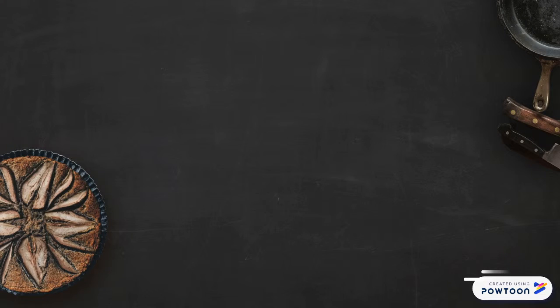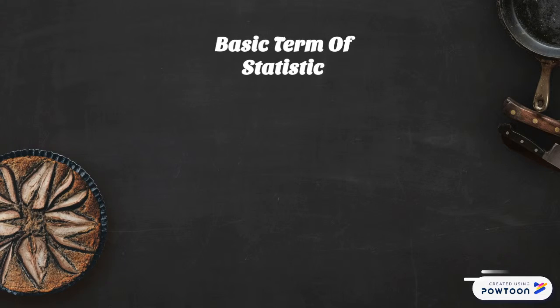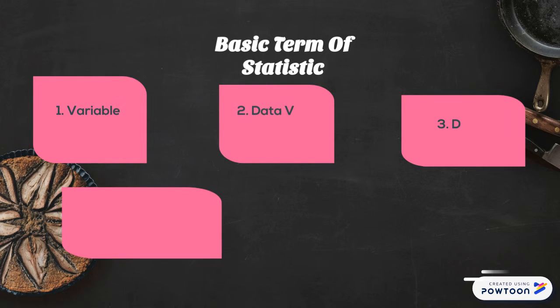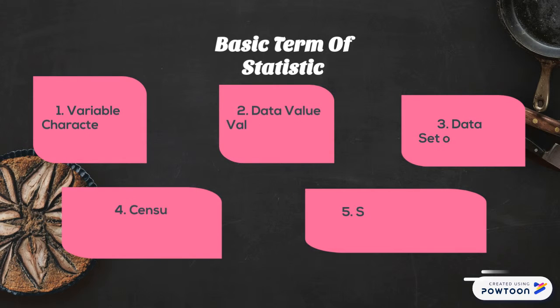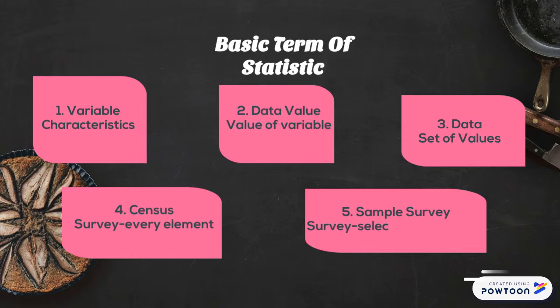Basic terms of statistics. Number one: variable characteristic. Number two: total value of variable. Number three: total set of values. Number four: sample survey — every element. Number five: sample survey — survey selected sample only.